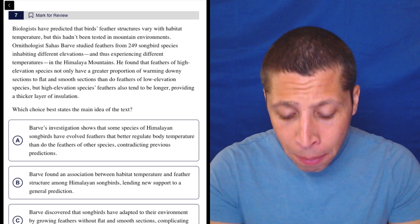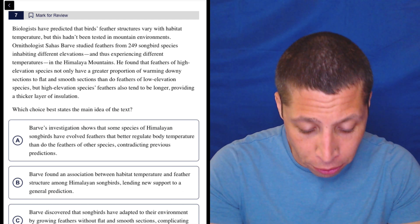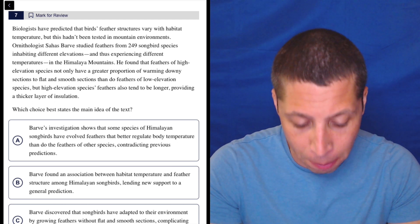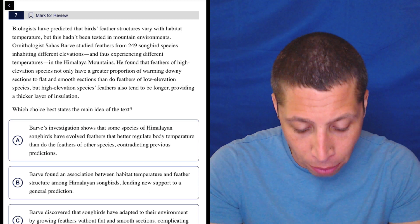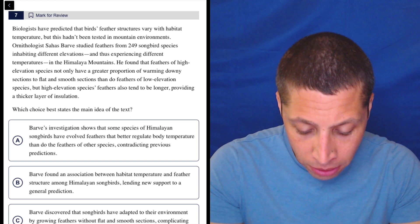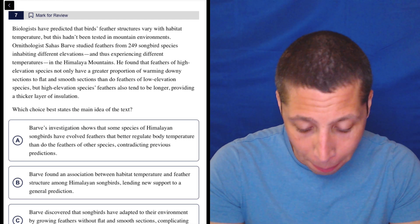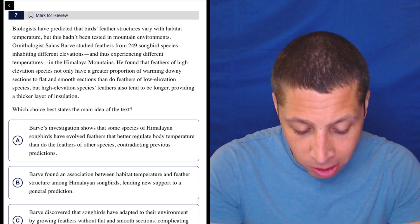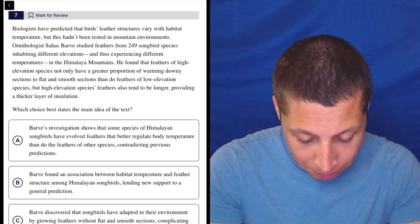Passage. Biologists have predicted that birds' feathers' structures vary with habitat temperature, but this hadn't been tested in mountainous environments. Ornithologist Sehas Barv studied feathers from 249 songbird species inhabiting different elevations and thus experiencing different temperatures in the Himalaya Mountains.